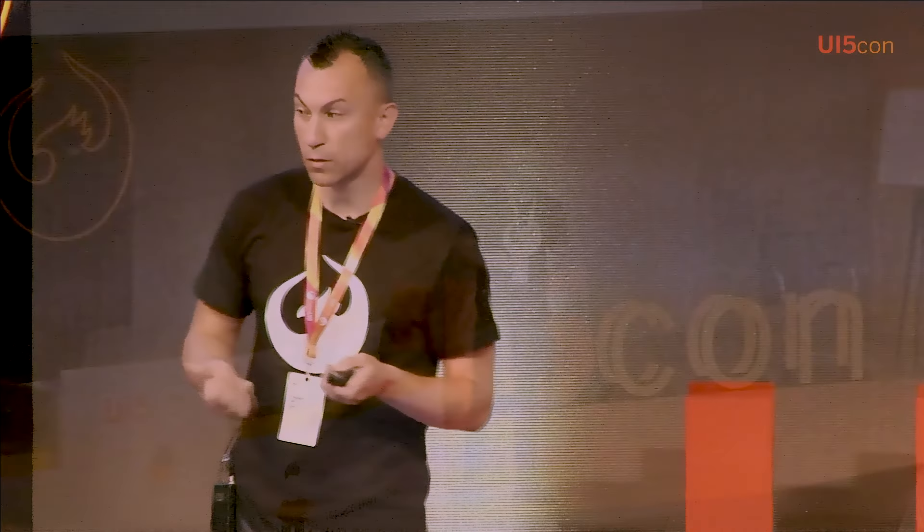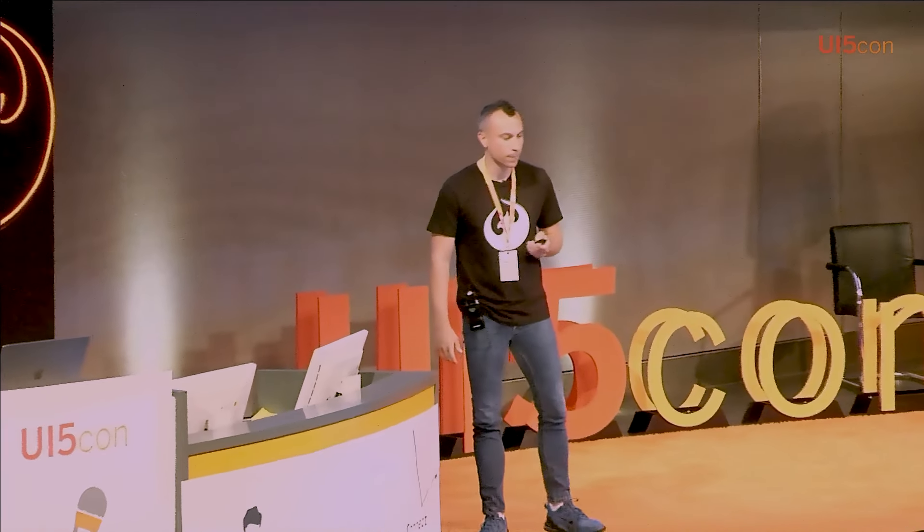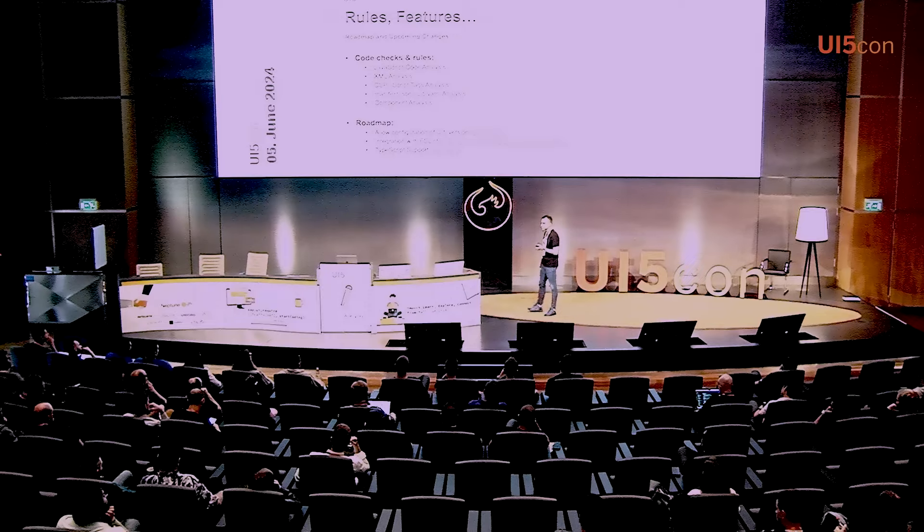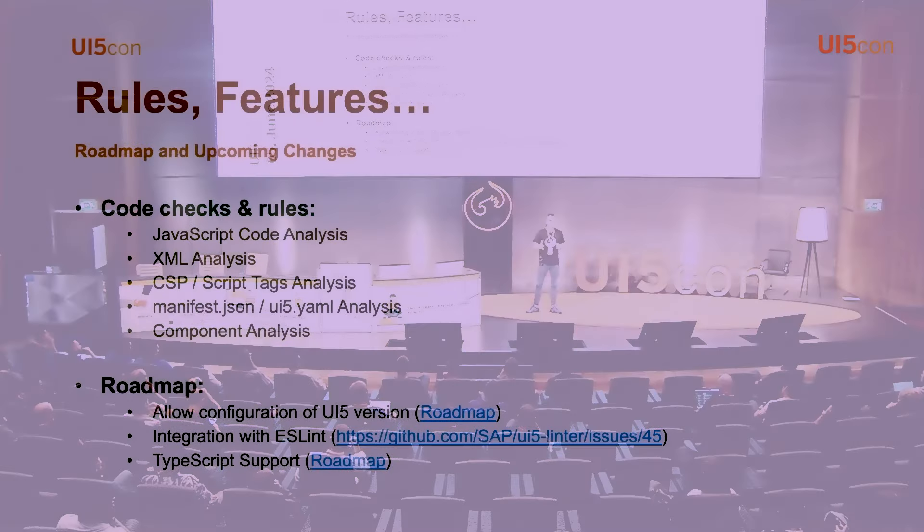We can go deeper. We can detect CSP issues — for example, if you want your project to be CSP compliant, we can detect inline JavaScript within your HTML files. We also analyze the core UI5 tooling files: manifest.json and ui5.yaml, detecting deprecated libraries used there. And the trickiest part is the component analysis. A component is not just a single file — it's many things — and we need the full knowledge of your application to analyze, for example, whether your component is set to run in async mode.